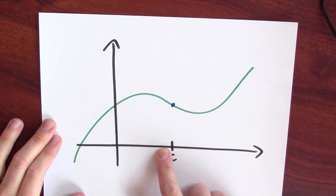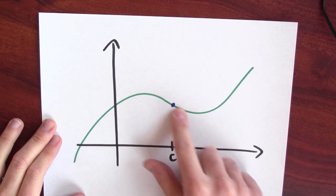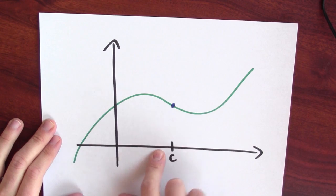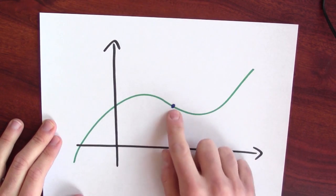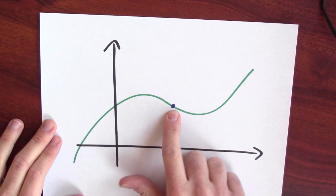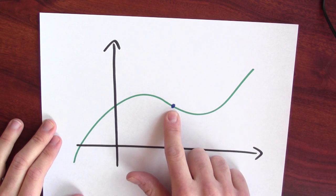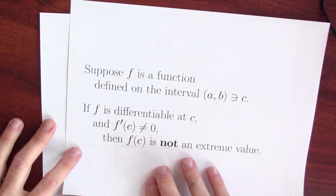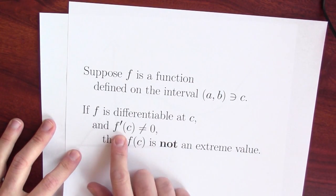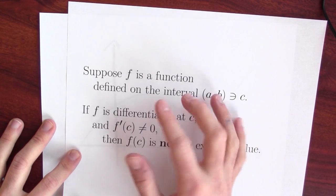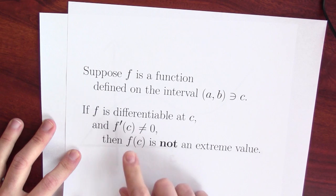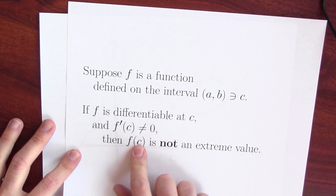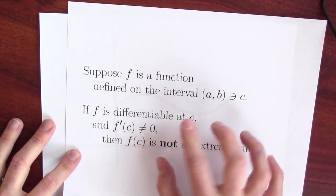What does that mean? That means if I wiggle the input a little bit, I actually do affect the output. If I increase the input a bit, the output goes down. If I decrease the input a bit, the output goes up. Consequently, that can't be an extreme value. That's not the biggest or the smallest value when I plug in inputs near c. And that's exactly what this statement is saying: if the derivative's not zero, that means I do have some control over the output if I change the input a little bit — that means this output isn't an extreme value, because I can make the output bigger or smaller with small perturbations to the input.